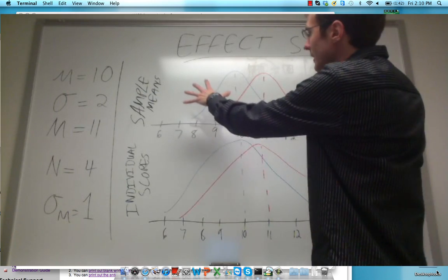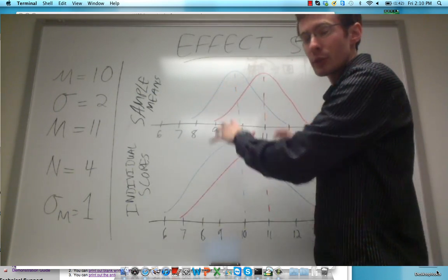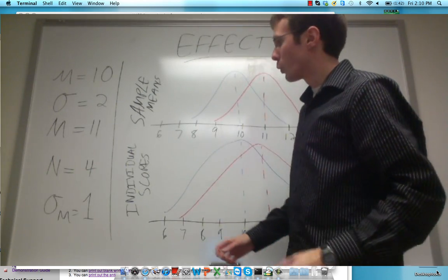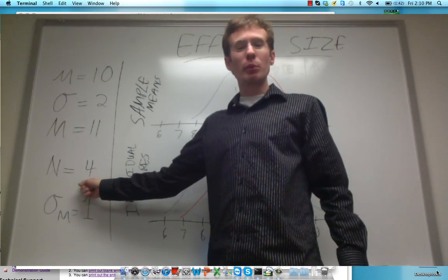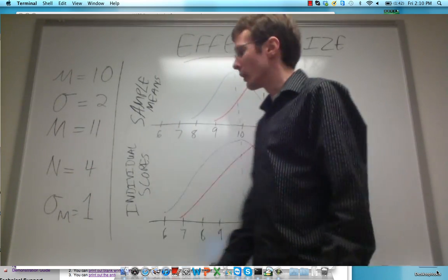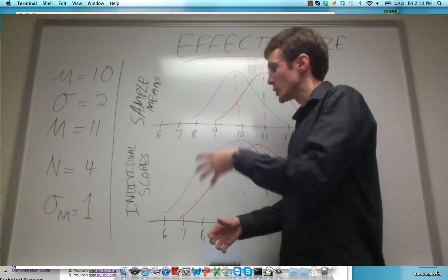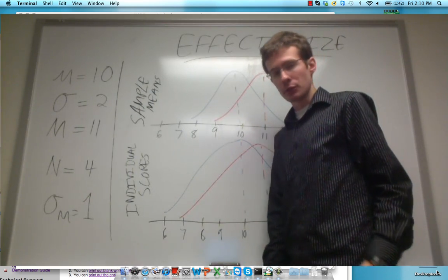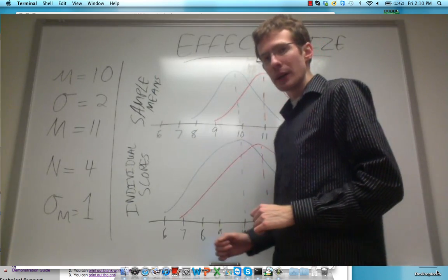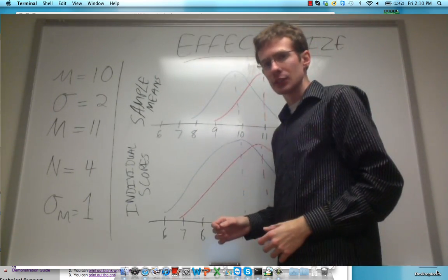Also, effect size does not take into consideration the number of people or observations in your sample. As we've talked about before, increasing n, or the number of subjects or observations, decreases the standard error and decreases the amount of overlap between your null distribution and your alternative distribution. For an effect size, we don't want to be influenced by that because we know that different samples will then lead to different effect sizes.